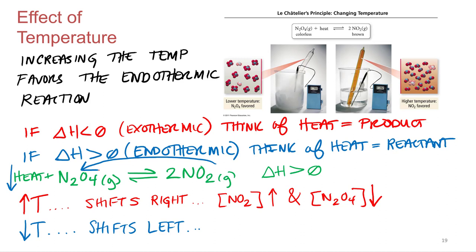A student asks: is it incorrect to think that with less heat, there's less potential energy, so the system wants to be more stable and goes from NO₂ to N₂O₄? The teacher responds: yes, you can think of it that way. Since it's endothermic, you're going uphill in potential energy. At lower temperature, you simply don't have enough energy to make the higher potential energy products — you're not giving it enough energy to go uphill. For an endothermic reaction, the products are at higher potential energy.